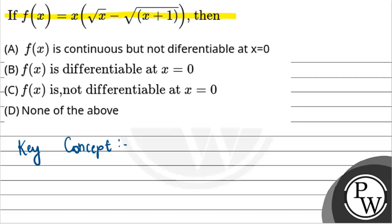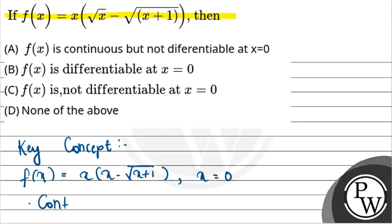First we have to analyze this function f(x) = x(√x minus √(x+1)) at x=0, for both terms: continuity and differentiability.